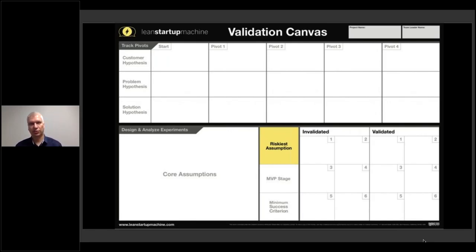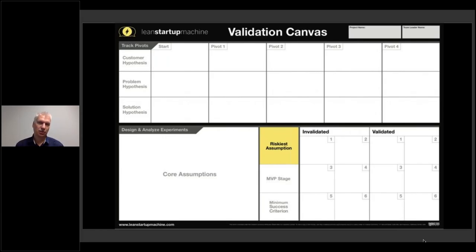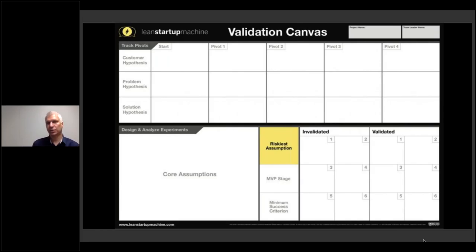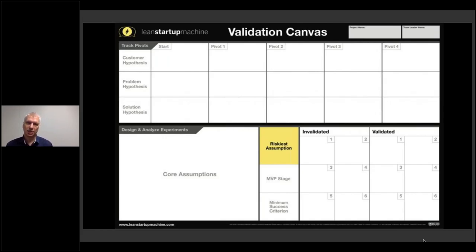The validation canvas has the customer hypothesis, problem hypothesis, solution hypothesis, and so forth. Then you have the riskiest assumption — you start from what is, if proven to be not true, would mean the whole company makes no difference. That's why taking a deep dive into product-market fit is so crucial: to find whether we are delivering value in gains or removing pains, and whether we have a big enough market segment of customers we can cater for.